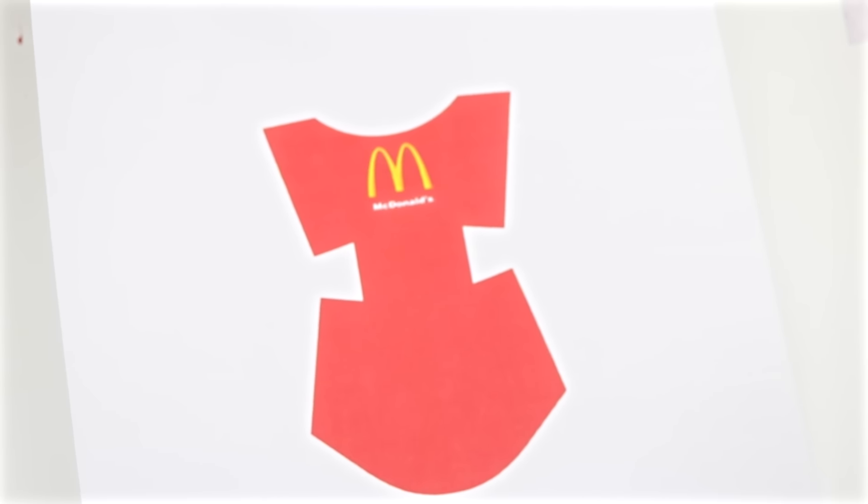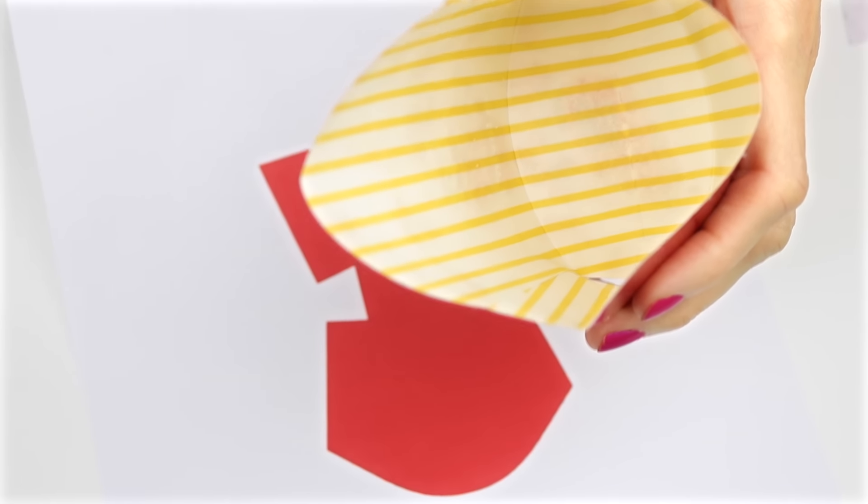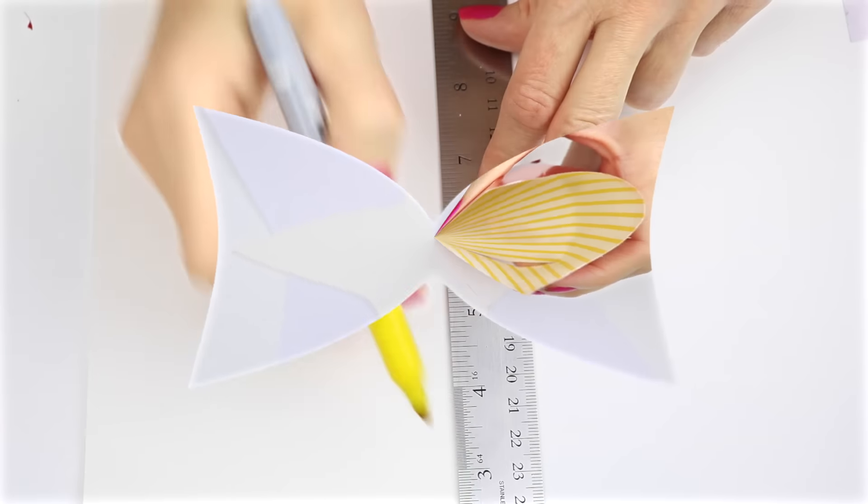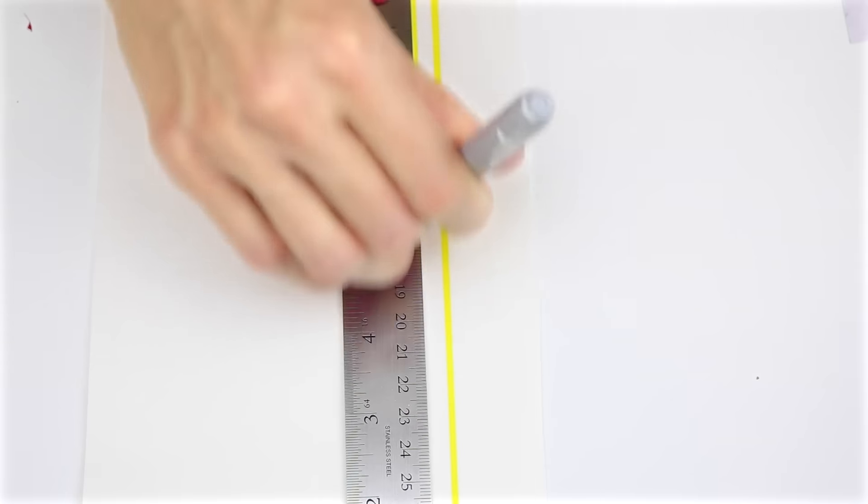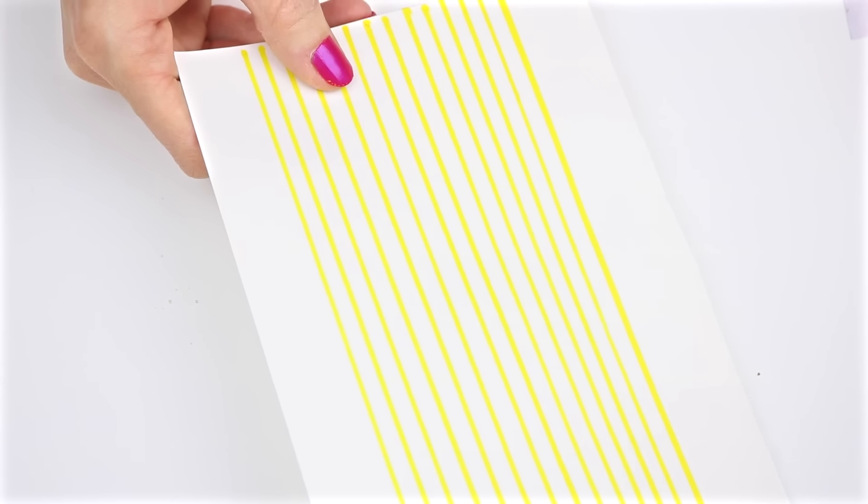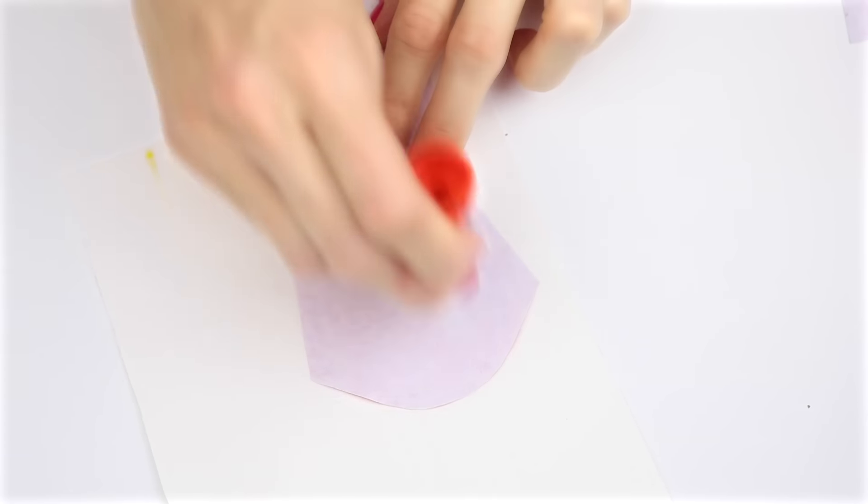While the foam pieces are drying, head over and print out this french fry box. The link will be down below. You will also need a piece of cardstock. And if you want the yellow lines to make it look more like a real french fry box, then just use a yellow marker to make the lines on the piece of cardstock.